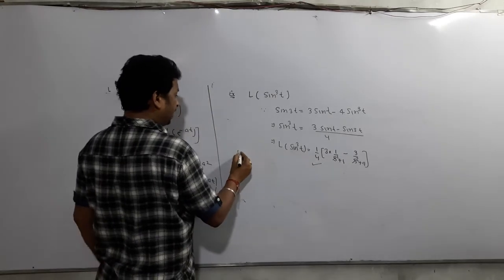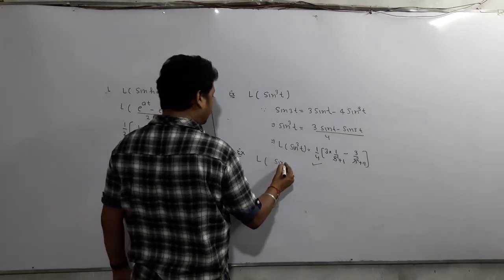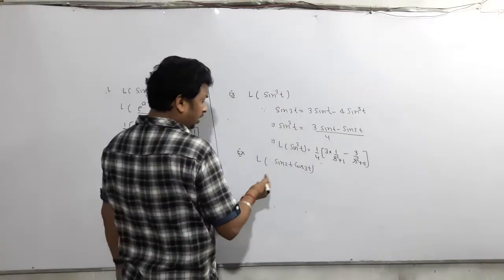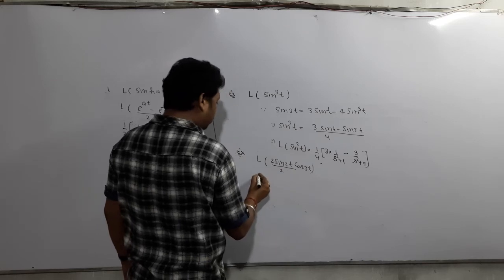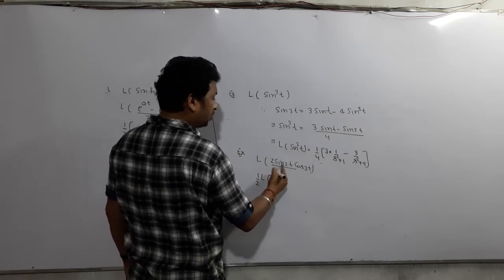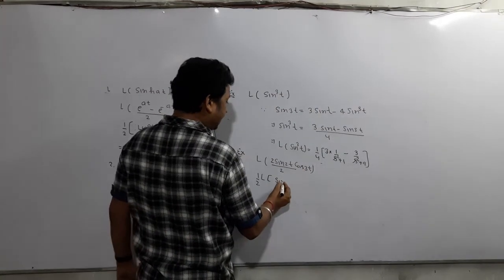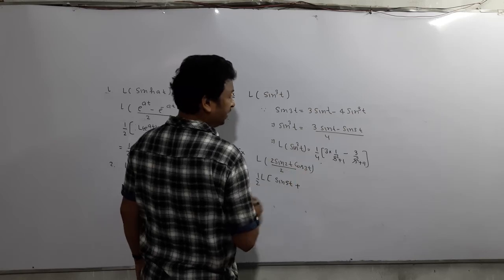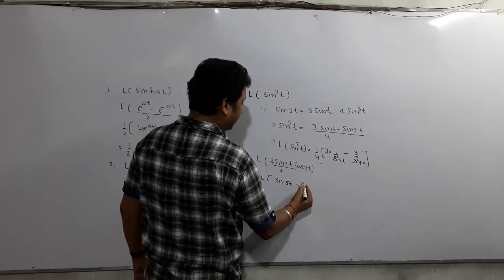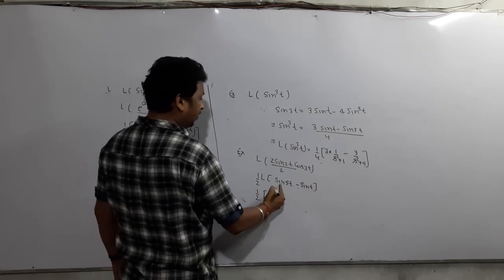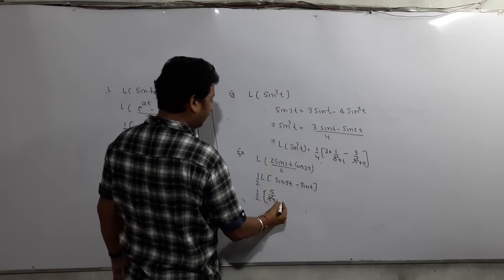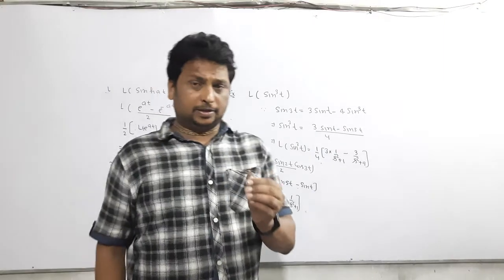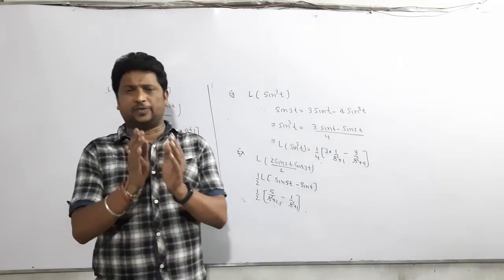Now one more example: sometimes they ask what is Laplace of sin(2t)·cos(3t). Here both are multiplied, so we multiply and divide by 2: using the identity 2·sin(A)cos(B) = sin(A+B) + sin(A−B), we get (1/2)[sin(5t) + sin(−t)] = (1/2)[sin(5t) − sin(t)]. Now find its Laplace: Laplace of sin(5t) is 5/(s² + 25), and Laplace of sin(t) is 1/(s² + 1), so the final answer is (1/2)[5/(s² + 25) − 1/(s² + 1)].